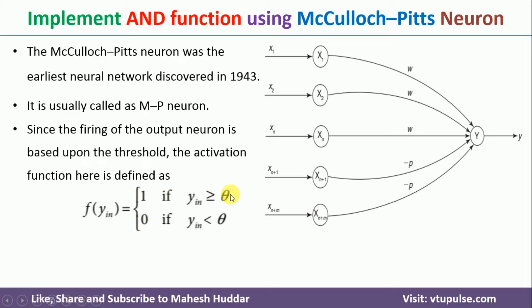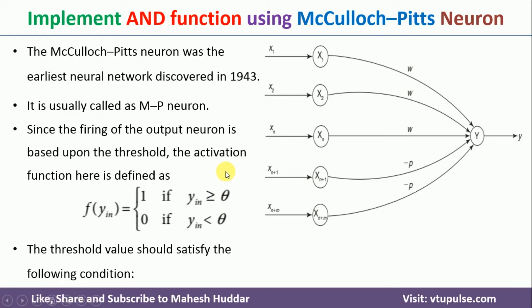Now, what should be the value of theta? The value of theta should be greater than or equal to n·w minus p, where n is the number of neurons in the input layer, w is the positive weight, and p is the negative weight.